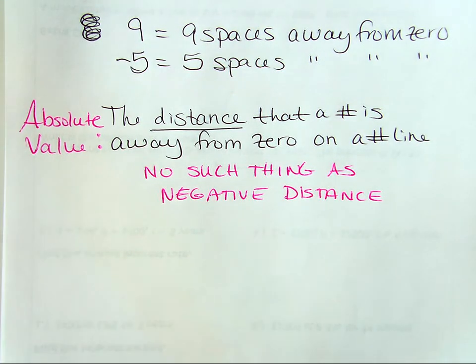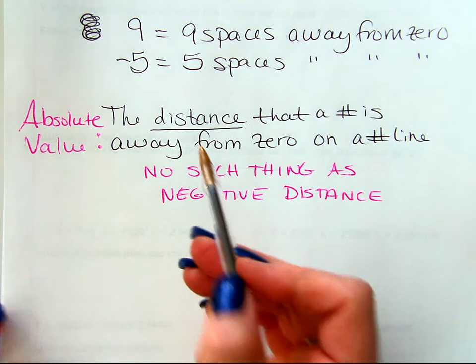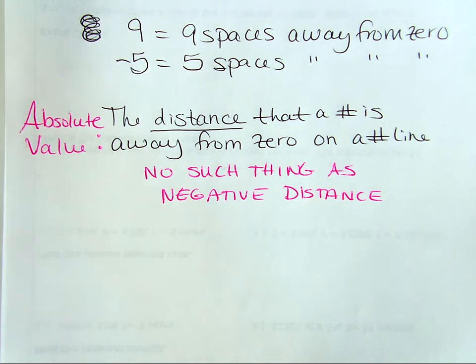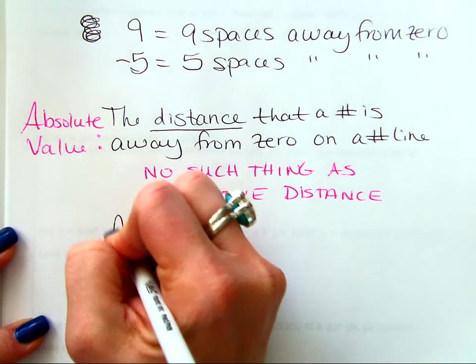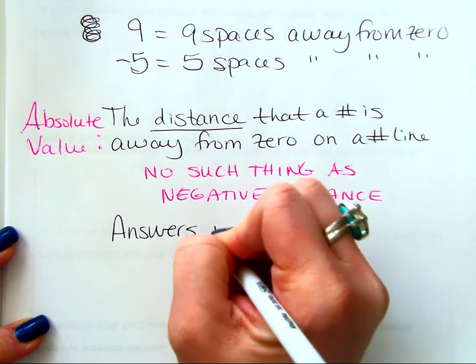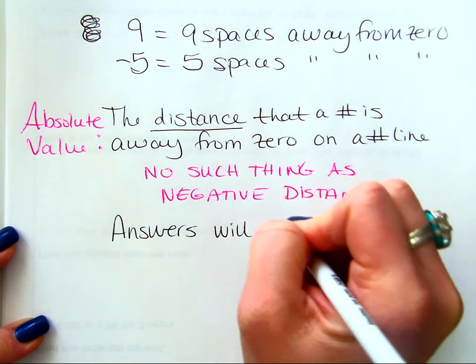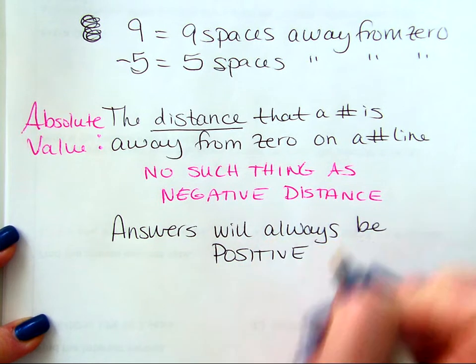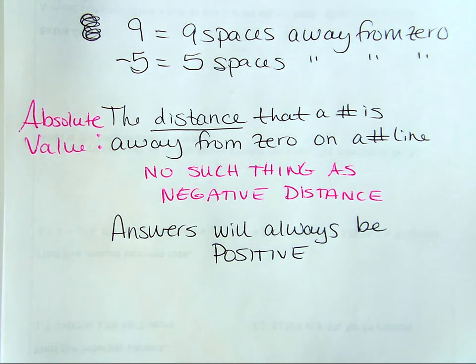So, because walking or driving backwards doesn't undo the fact that you just moved, there's no such thing as negative distance. So, you know what that tells me? If distance is the word that we use to define absolute value, then your answers for absolute values will always be what kind of a number? Positive. Good. You got it. So, your answers will always be positive. They're going to be something later on, maybe in eighth grade, that throws a little something in there, but nothing for you to worry about right now.